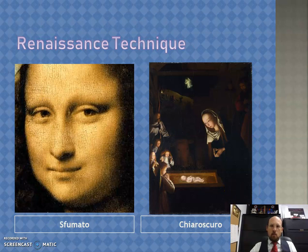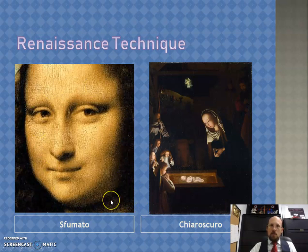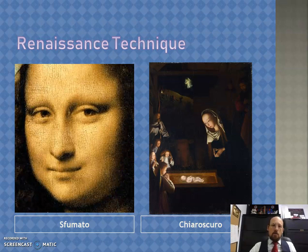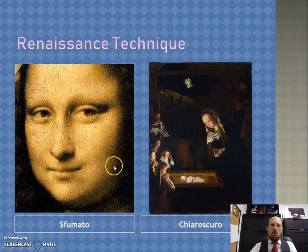There are a couple of painting techniques to be aware of as well. One is called sfumato — the blending of colors. You can see this on the Mona Lisa by Leonardo da Vinci. There's not really a defined border. Think about a cartoon where there's a very firm, defined border on where one thing is and another begins. But in this painting, everything sort of slowly blends into shadow. That's the technique called sfumato.